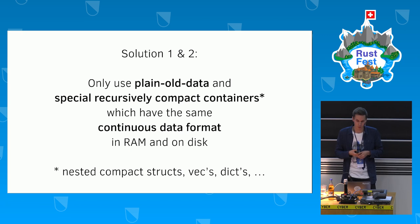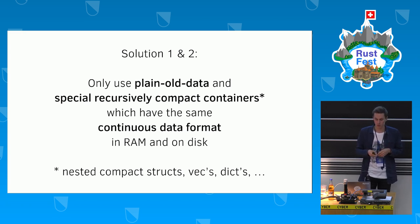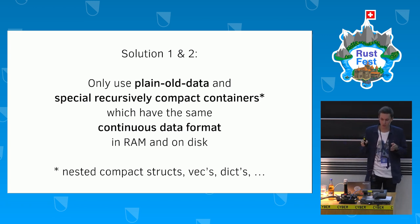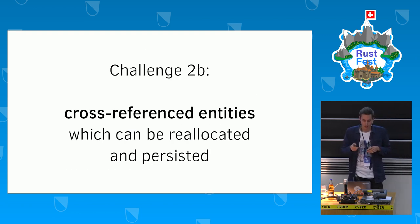I devised solutions back in C++ times: using plain old data and what I call recursively compact containers — structs of vectors and dictionaries laid out consecutively in memory, growing together. This means each entity has a continuous data format identical in RAM and on disk. But entities cross-reference each other and can move in memory, so plain pointers stop being valid. The solution: entity IDs as an indirection with slot maps that resolve IDs into actual pointers at runtime.